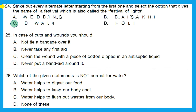Question 25: in case of cuts and wounds, what should you do? The right answer is option C — in case of cuts and wounds, first aid should be given immediately. First, clean the wound with a piece of cotton dipped in an antiseptic liquid, then tie a bandage or put a bandage over it. Option C is the right answer.